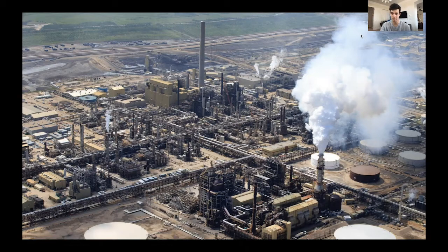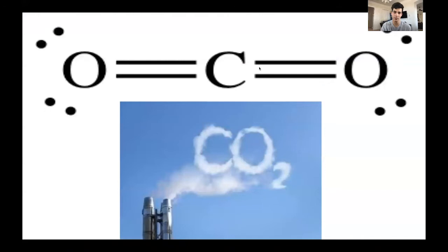Carbon dioxide, also known as CO2, consists of one carbon and two oxygen atoms. Here is its Lewis structure: the carbon has a double bond to each oxygen atom, and each oxygen atom has two lone pairs.